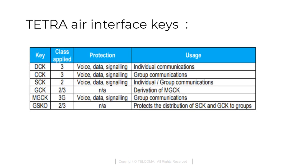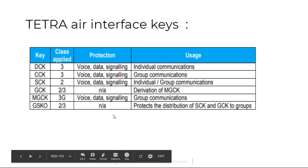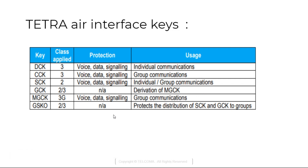Now summarizing the air interface keys: DCK (Derived Cipher Key) — Class 3 applied, used for voice/data/signaling protection in individual communications. CCK (Common Cipher Key) — Class 3 applied, used for voice/data/signaling in group communications. SCK — Class 2 applied, used for voice/data/signaling in both individual and group communications. These are all the air interface keys.